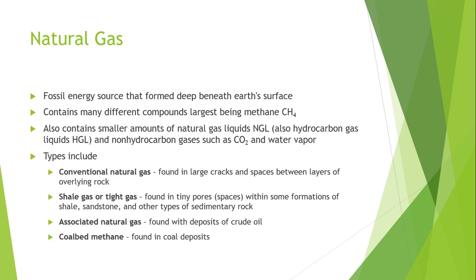There are four types of natural gases. The first is conventional gas found in cracks and spaces between layers of overlying rock. The second is shale gas or tight gas found in tiny pores within formations of sandstone, shale and other sedimentary rocks. The third is associated natural gas found with deposits of crude oil. The fourth is coal bed methane, found in coal mines or coal deposits.